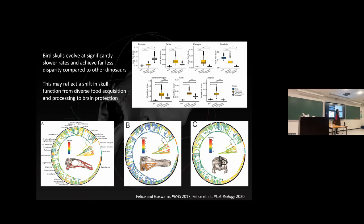Birds are almost always the slowest evolving in terms of skull morphology. When you think about dinosaur skulls, they perform a range of functions — fighting, complex chewing, diverse diets, crazy ornamentation — while birds really just need to process food with a beak and house the brain. All the display functions that dinosaurs do with bone, birds do with feathers. So this represents a shift from many skull functions in dinosaurs to really just processing food and housing the brain in birds — which makes a lot of sense, though some bird people were apparently offended.